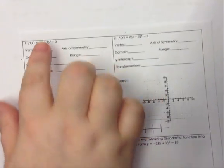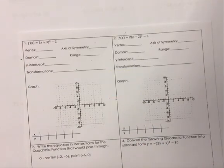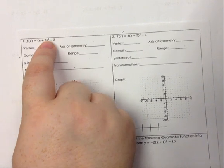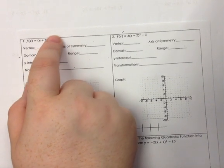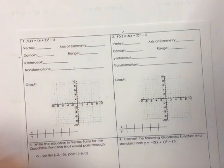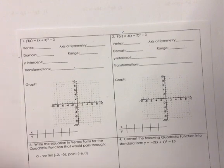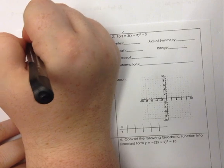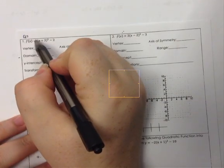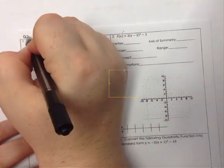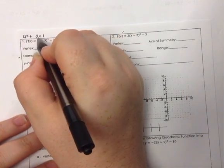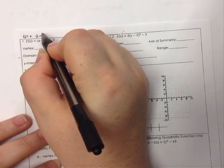For the first question, we're given f of x equals x plus 3 squared minus 2. This is in vertex form because it's squared and has that minus 2 at the end. We want to find four values. The a value is positive, and a equals positive 1.